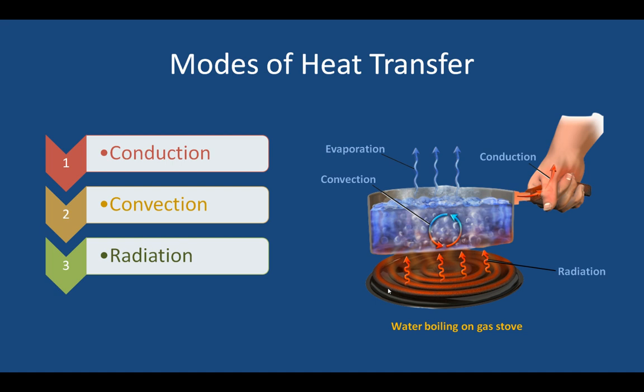Different modes of heat transfer are classified as conduction, convection, and radiation. One example is water boiling on a gas stove: heat is transferred from the burner in the form of radiation to the bottom surface of the pot, then conduction takes place through the wall of the pot, and finally heat is transferred from the solid surface to the water — this transfer from a solid surface to a liquid is called convection.